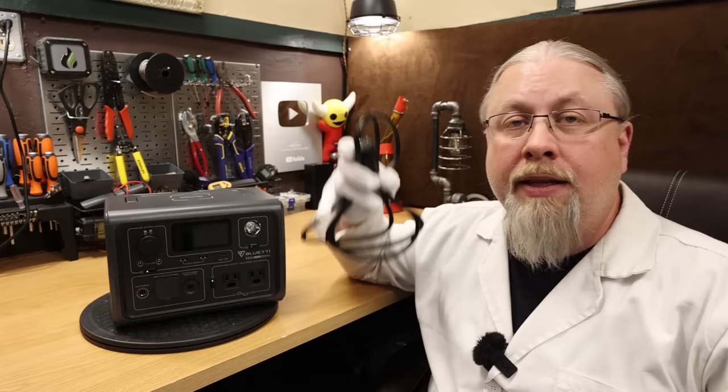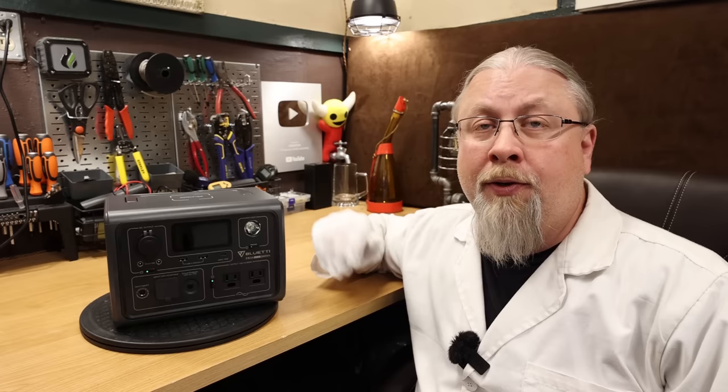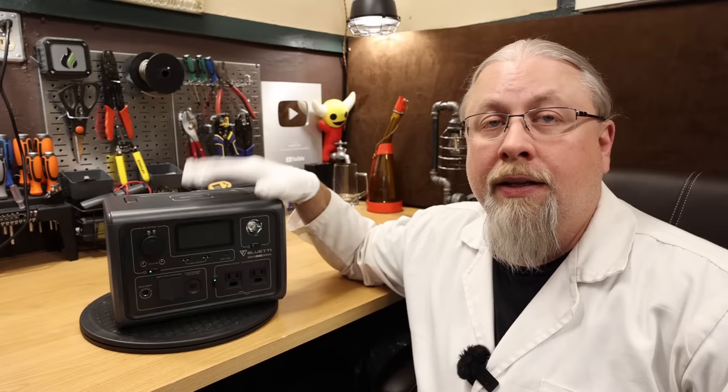The second way to charge is with solar at up to 200 watts. The EB3A supports 200 watt solar from 12 to 28 volts. Under perfect sky conditions with a 200 watt panel, you can expect to charge from dead to full in somewhere around two to two and a half hours. This will also charge from 12 or 24 volt vehicle. If you plug it into a 12 volt source, it'll take about four hours to charge from dead to full. And if you have a 24 volt battery, you can charge it directly through the solar port.